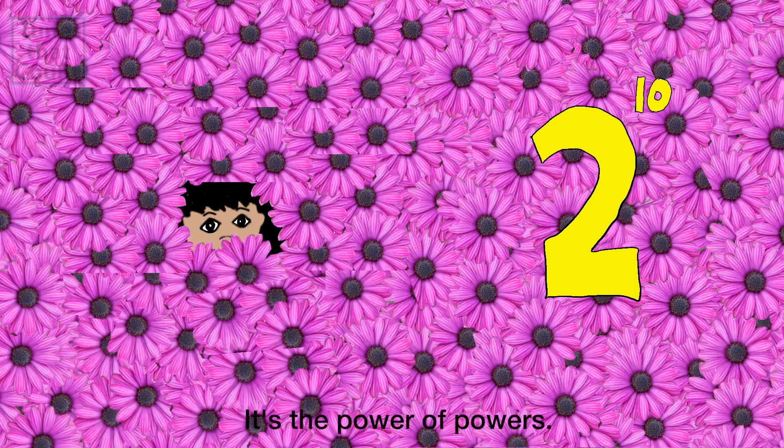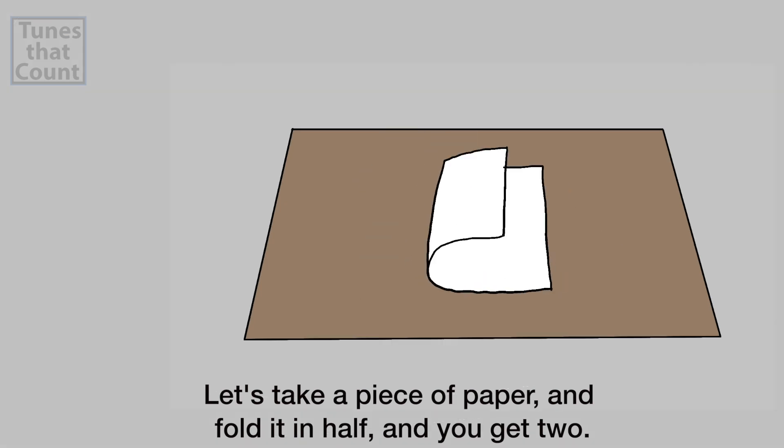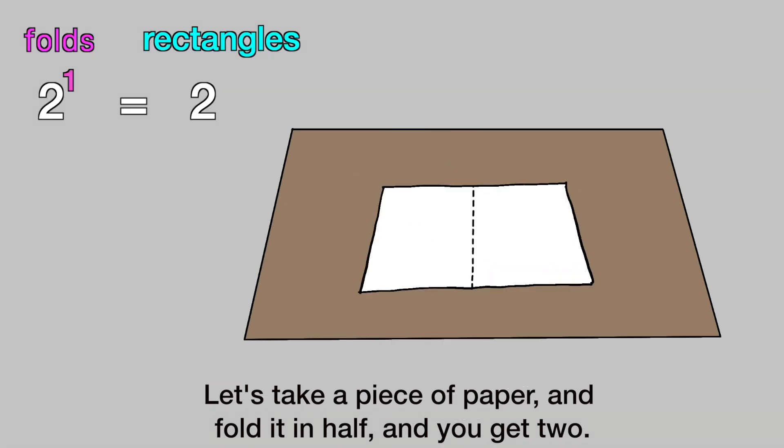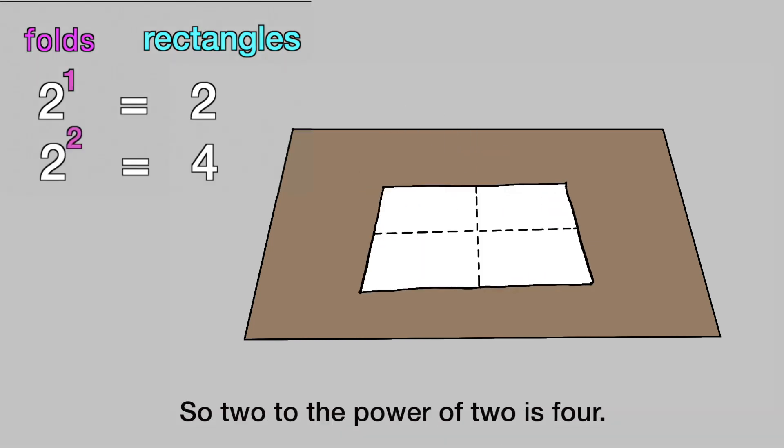It's the power of powers. Let's take a piece of paper and fold it in half, and you get 2. But fold it again, you get 2 more. So 2 to the power of 2 is 4.